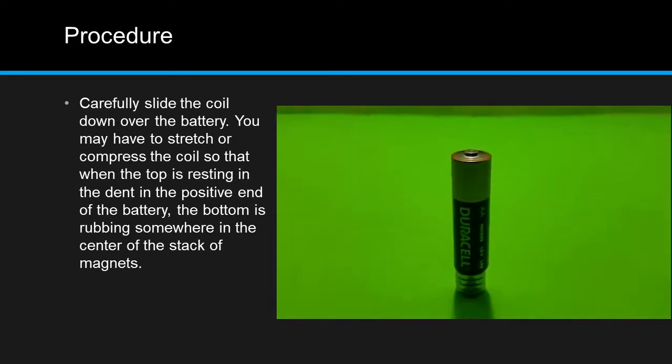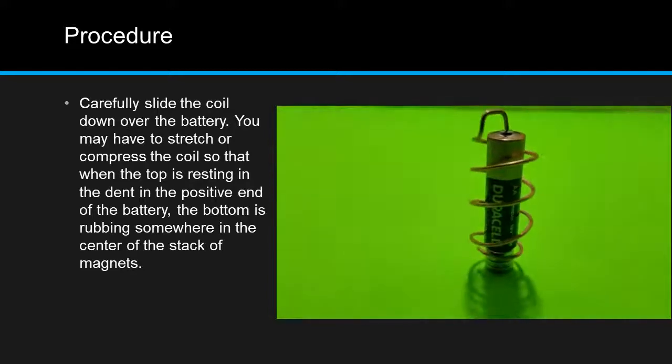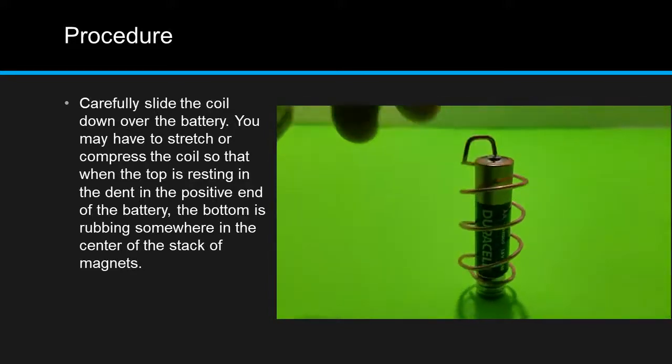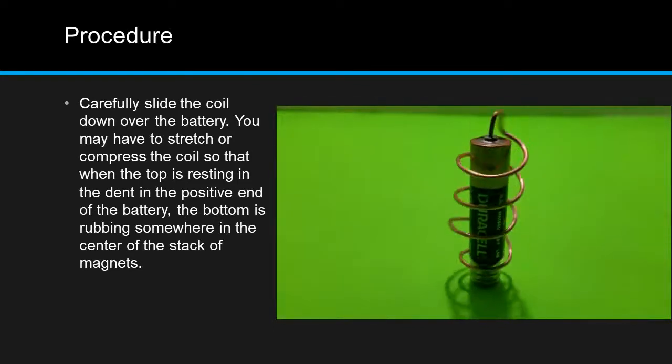Carefully slide the coil down over the battery. You may have to stretch or compress the coil so that when the top is resting in the dent in the positive end of the battery, the bottom is rubbing somewhere in the center of the stack of magnets.